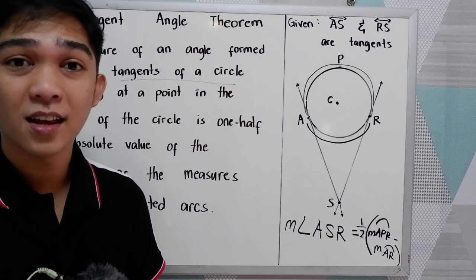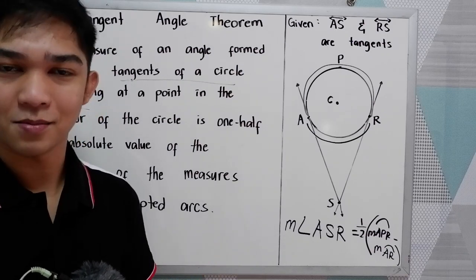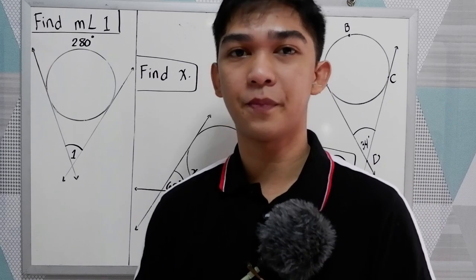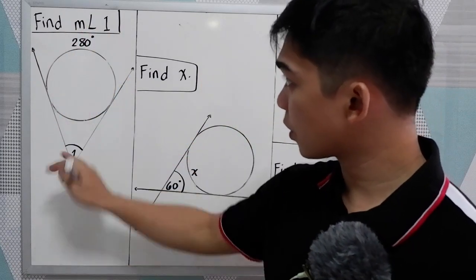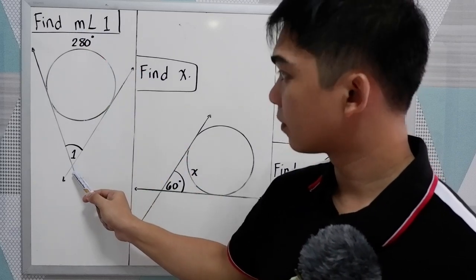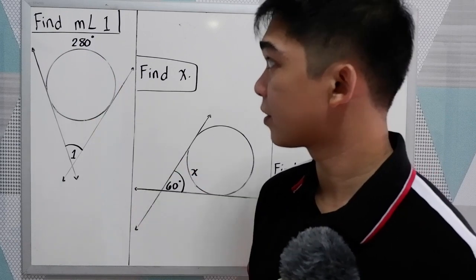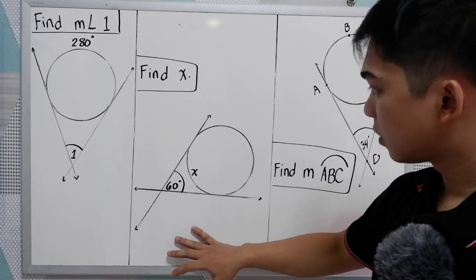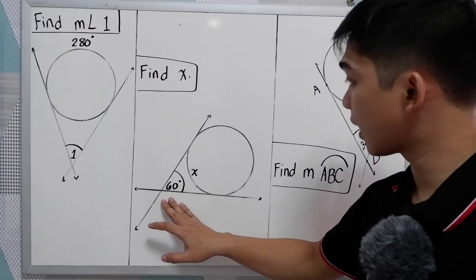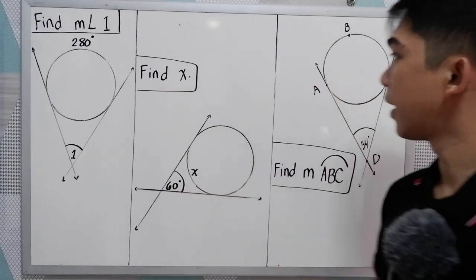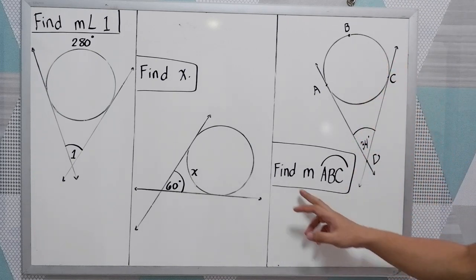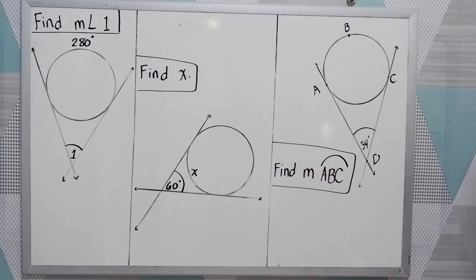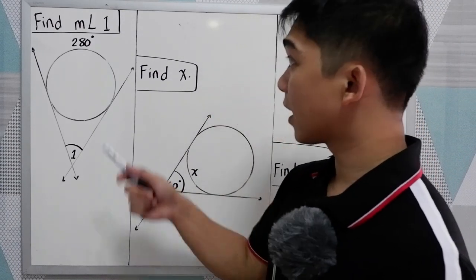Now, to better understand our fourth theorem, let's try to solve the following problems. In our first illustration, we're going to find the measure of angle 1, given the arc is 280 degrees. And for our second illustration, we have 60 degrees as our exterior angle. We're going to find x. And in our third illustration, we're going to find the measure of arc ABC, given the exterior angle. So we're going to apply theorem number four to get the unknowns.